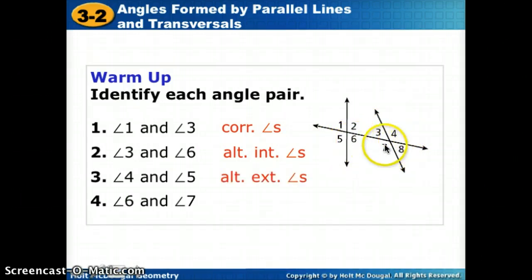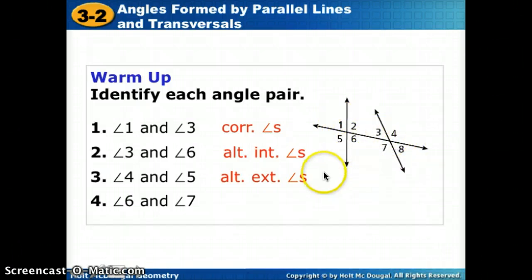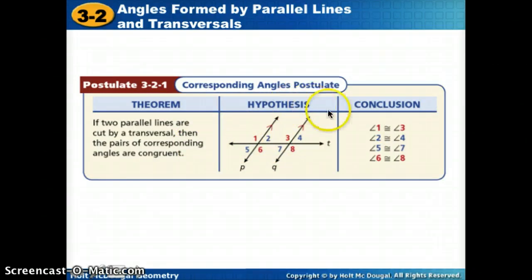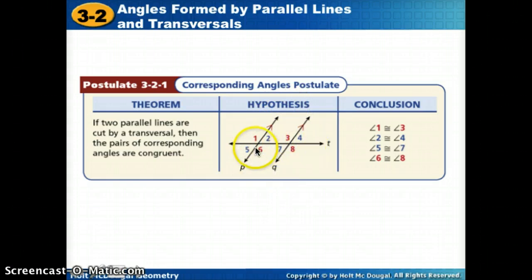Angles 6 and 7 are on the same side of the transversal but inside our two lines, so we call those same-side interior. Now we're going to add something about corresponding angles: if we have two parallel lines cut by a transversal, we have a postulate that says corresponding angles are congruent — meaning they have equal measures.